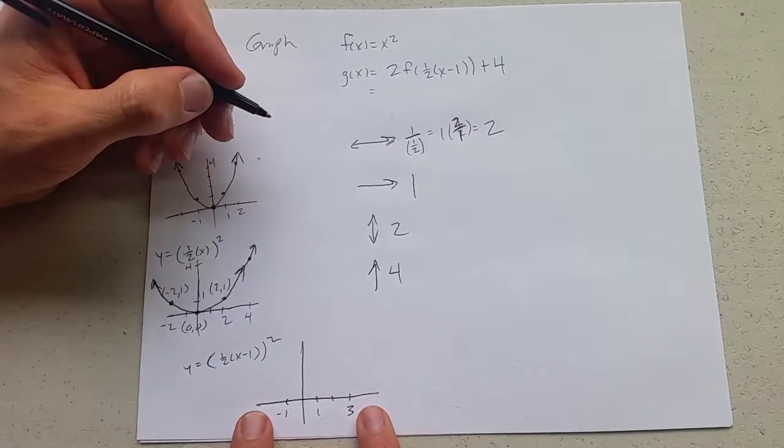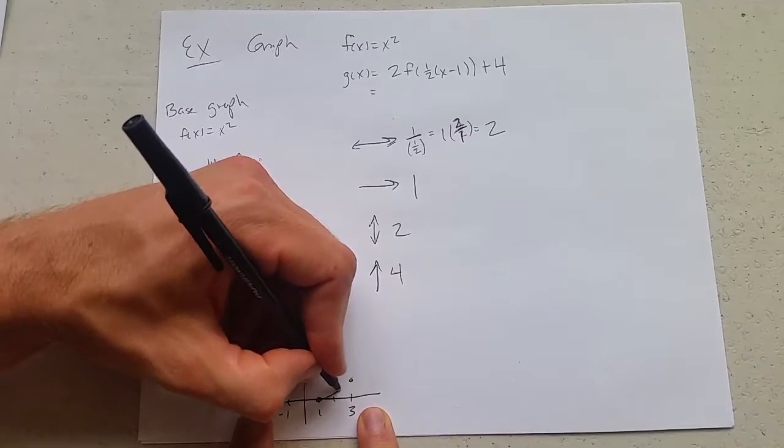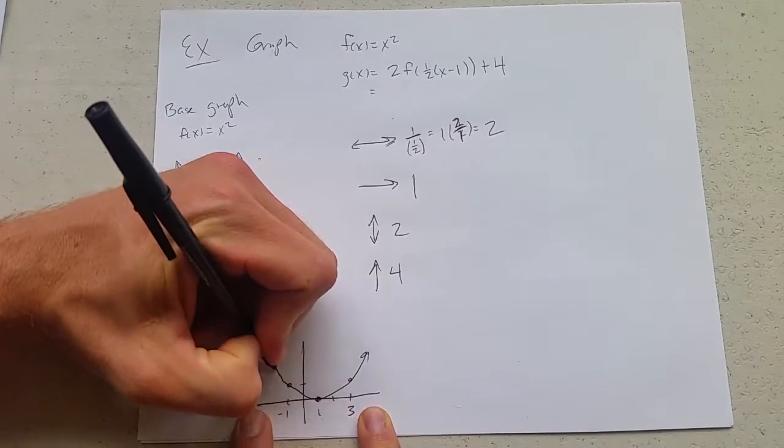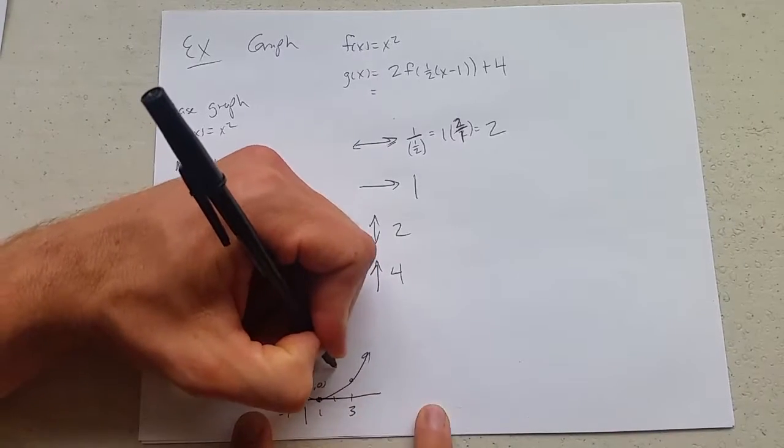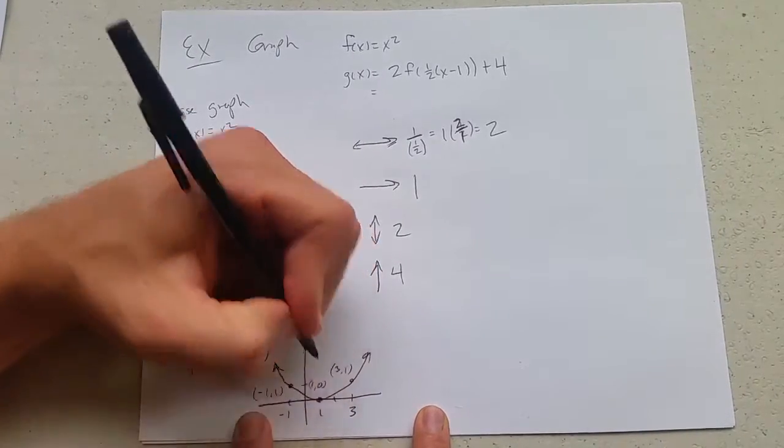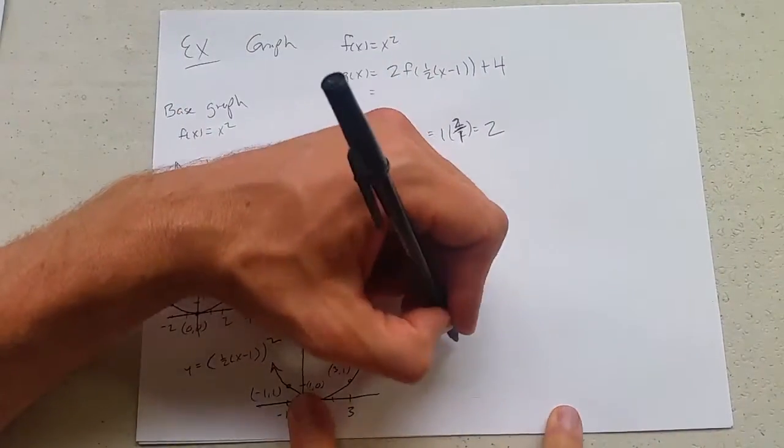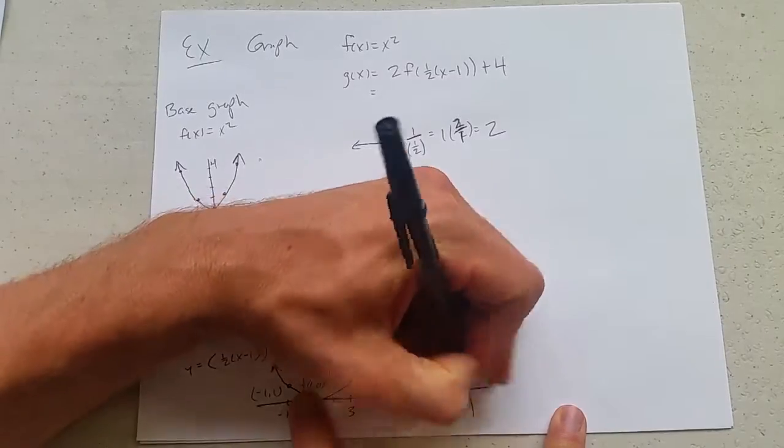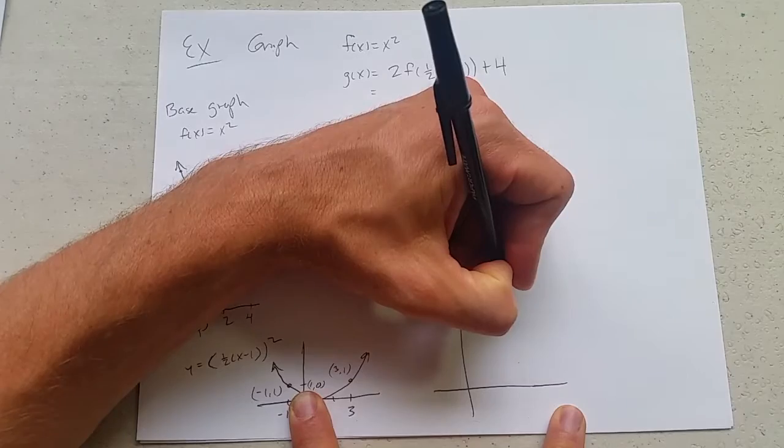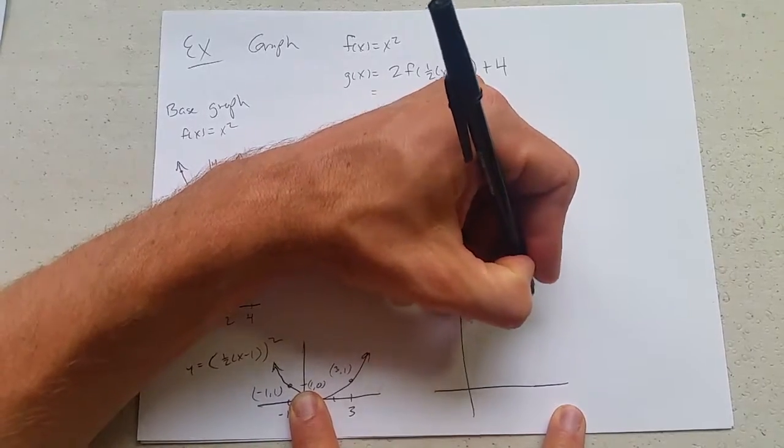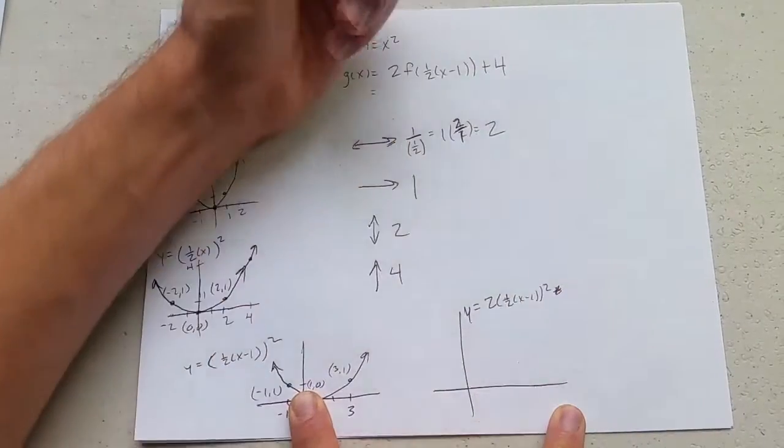So there's our three points and we'll do a vertical stretch by two, doubling our y values now. So this graph will be y = 2(1/2(x - 1))². Don't do the plus four, we're not there yet.